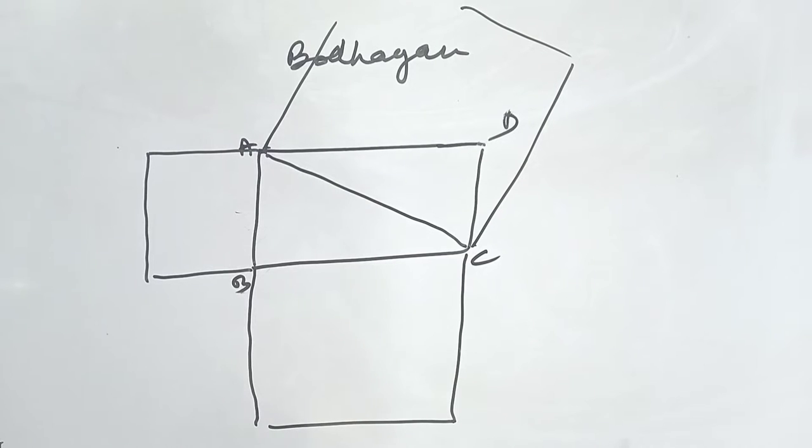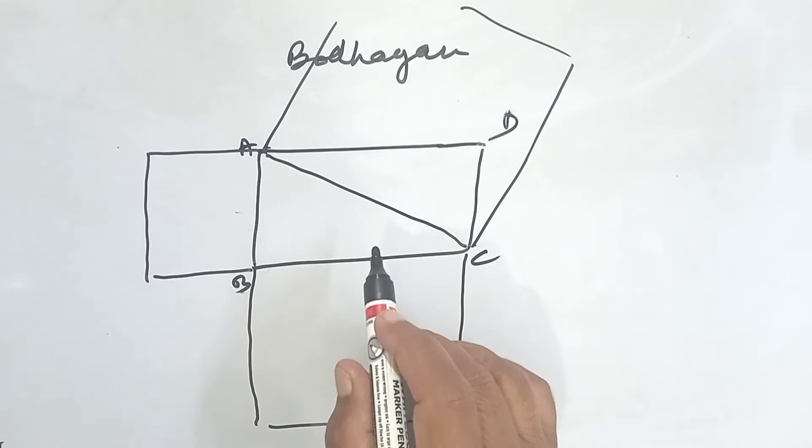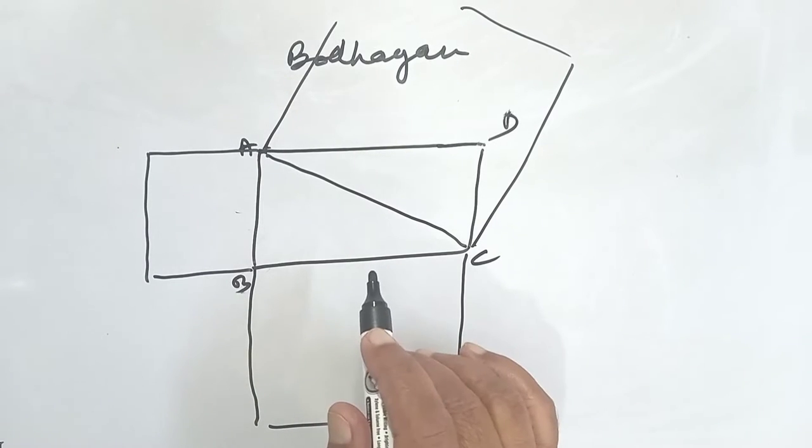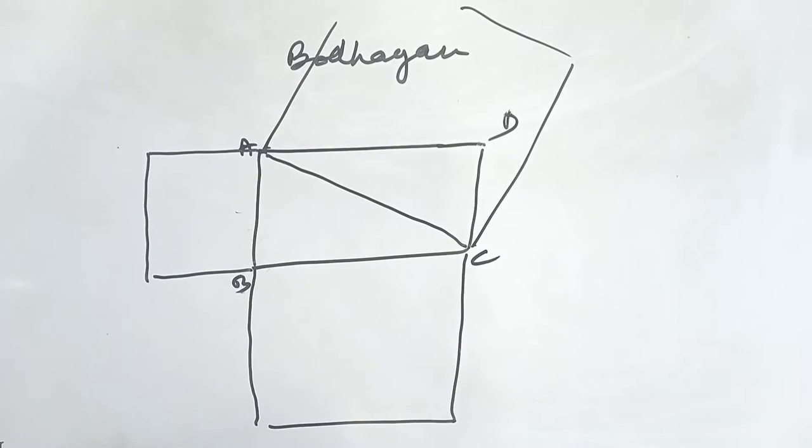In this video, we will discuss a scientific contribution made by an ancient Indian mathematician named Bodhayan. 800 BC back, Bodhayan listed his theorem in Shulba Sutra in the form of Shlok, which means...